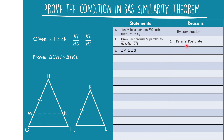Statement three: Angle HMN is congruent to angle G, and angle HNM is congruent to angle GI. The reason is corresponding angles, since we have parallel lines cut by a transversal.